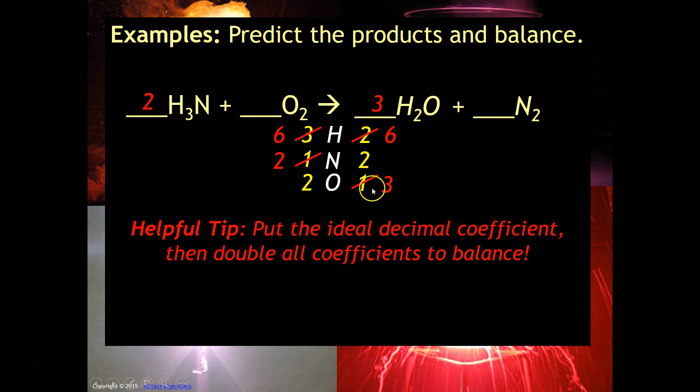So for example right now notice it's three to two. The ideal number that I would want to put in front of this oxygen in order to have three oxygen is one and a half because what this number times two, in this case one and a half times two, would give me three.